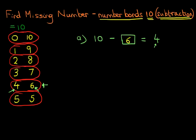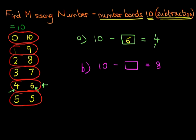Let's have a look at another example. This time we've got 10 minus something equals 8. Again, we're starting from 10. What number do we equal? It is 8. Find 8 — here it is. The number next to 8 is 2. Therefore, our answer is 2. 10 minus 2 equals 8.